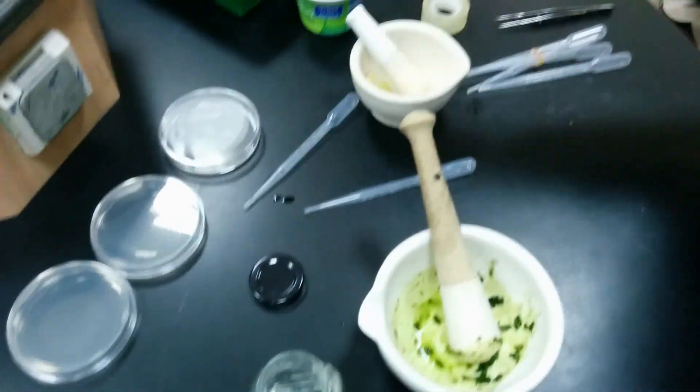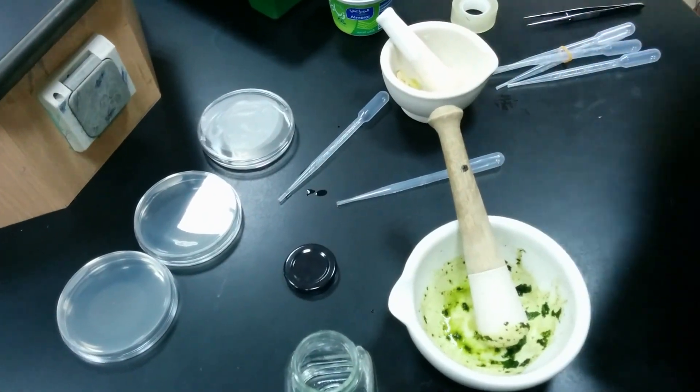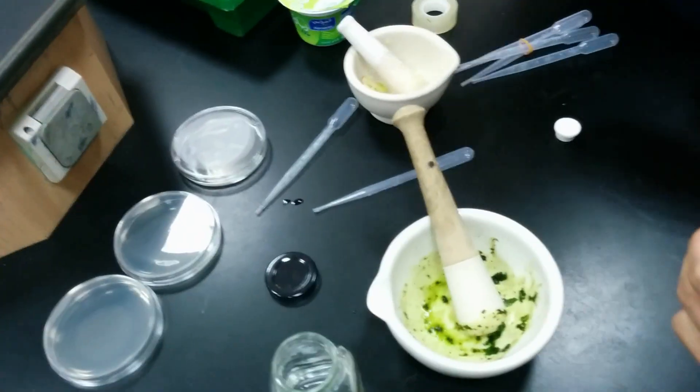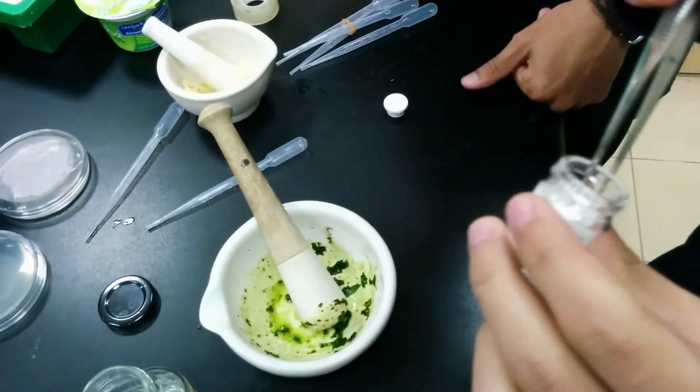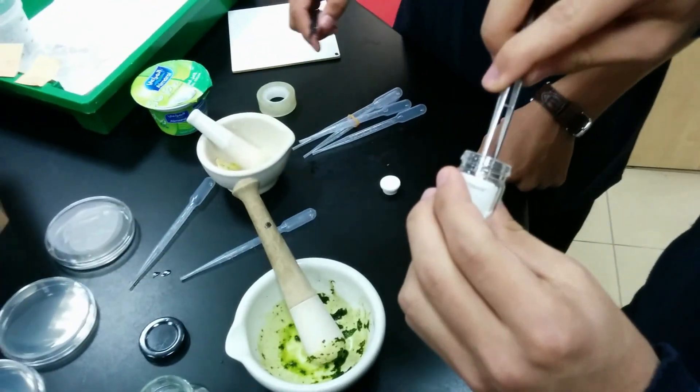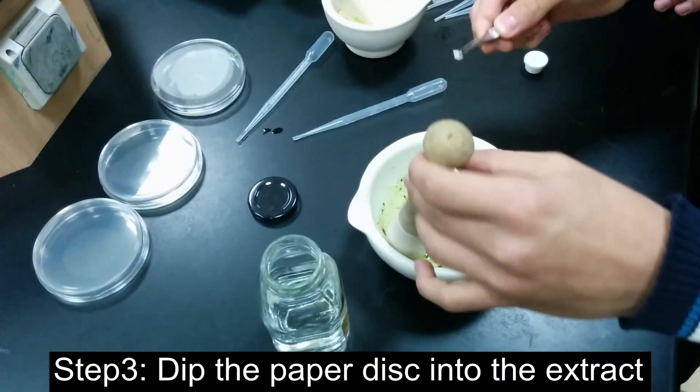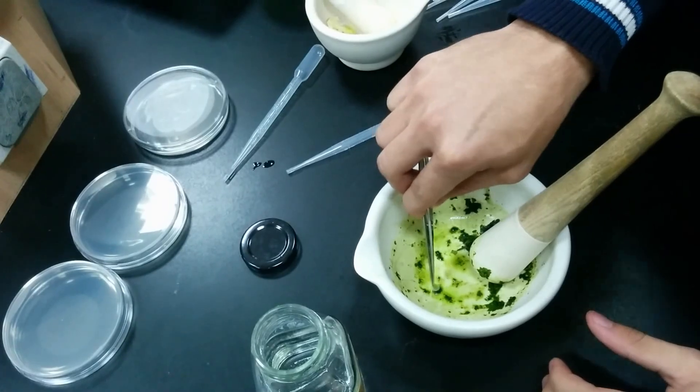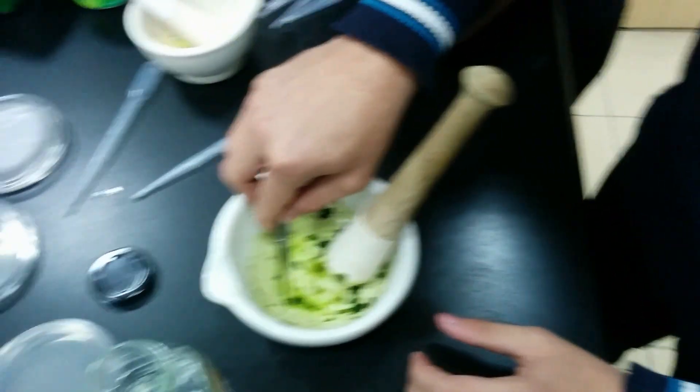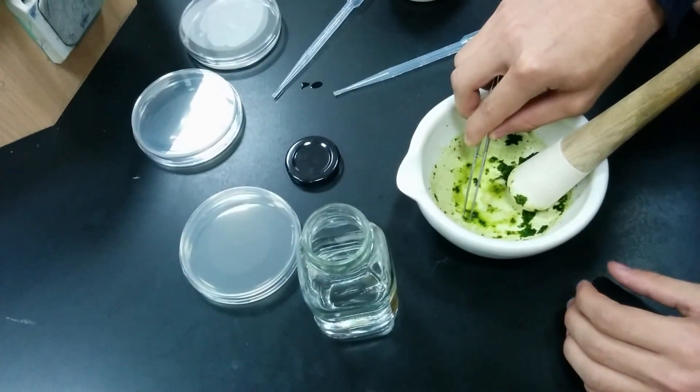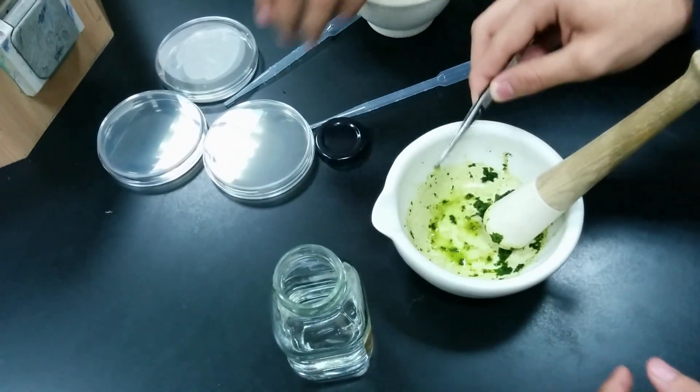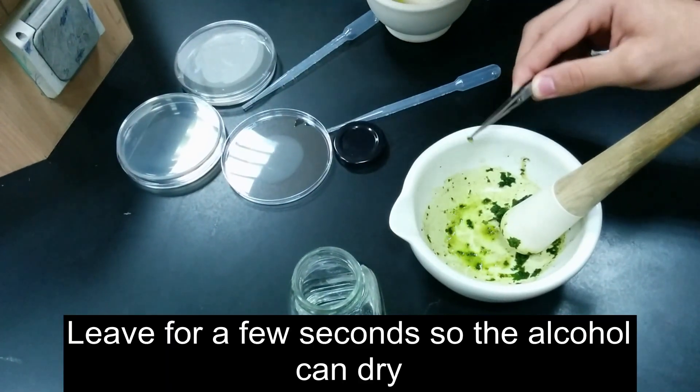Now we're going to use some paper disks. We're going to take one paper disk and dip it into the extract. Now we have to leave it to dry so we can make sure that only mint has the effect.